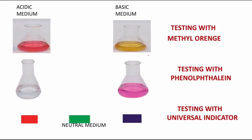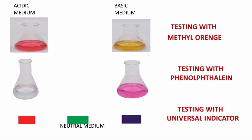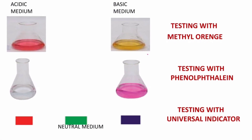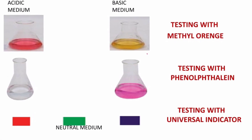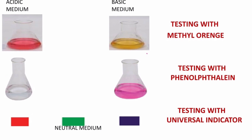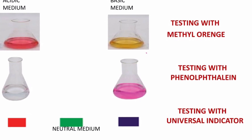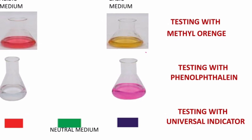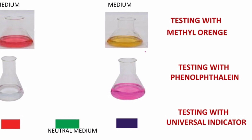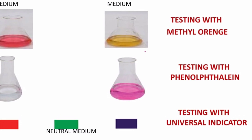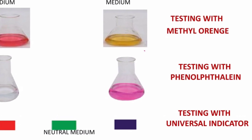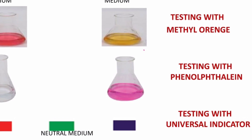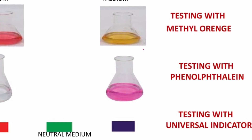Now let us revise. What is the color of methyl orange in acidic medium? — Red. What is the color of methyl orange in basic medium? — Yellow. What is the color of phenolphthalein in acidic medium? — Colorless. What is the color of phenolphthalein in basic medium? — Pink.